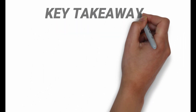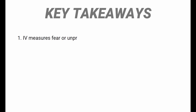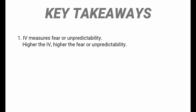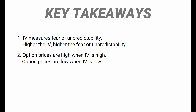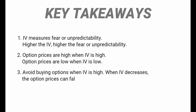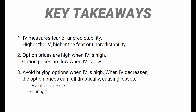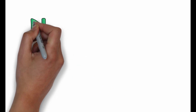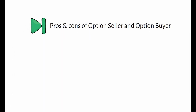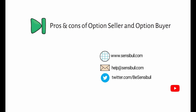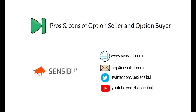Let's see the takeaways from this chapter. Number one: IV measures fear or unpredictability — higher the IV, higher the fear. Number two: option prices are high when IV is high and low when IV is low. Number three: avoid buying options when IV is high, because when IV decreases option prices can fall drastically, causing losses. IV rises during events like results or announcements and during times of high movement. That's it for this episode — in the next episode we will see the pros and cons of option sellers and option buyers. Take care and happy trading with Sensible!